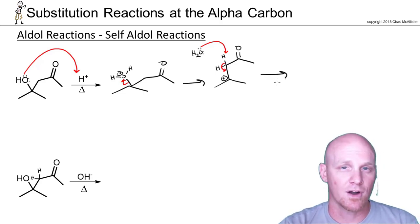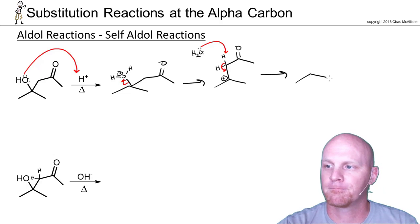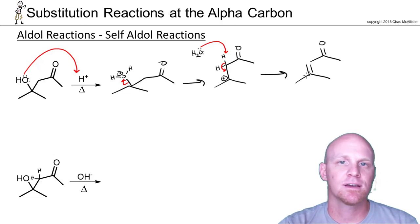Leaving group leaves, forming a carbocation, and then you deprotonate. Now in this case, we formed an alkene. There's no such thing as E or Z for this thing, but if it mattered, whichever was less sterically hindered would be the major. In this case, it's equivalent either way. That's the acid-catalyzed mechanism—three steps here.